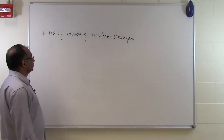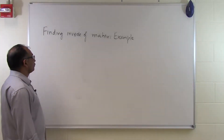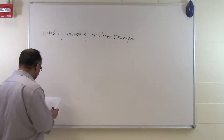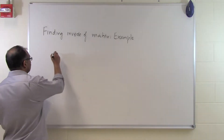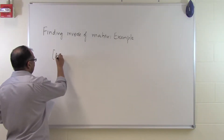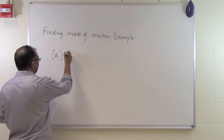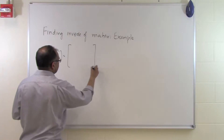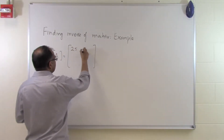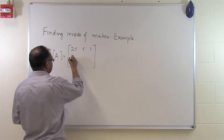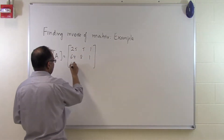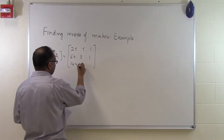In this segment, we will look at how to find the inverse of a matrix through an example. Let's suppose somebody says, go ahead and find out the inverse of this matrix: 25, 5, 1; 64, 8, 1; 144, 12, 1.